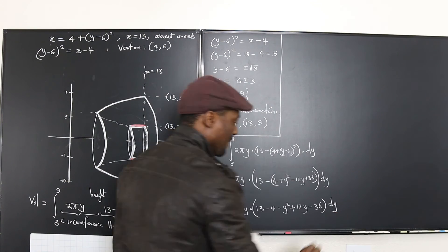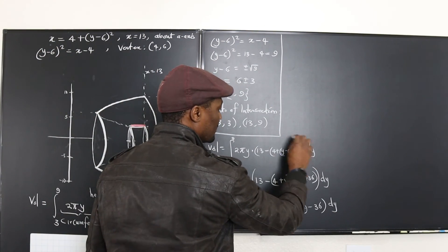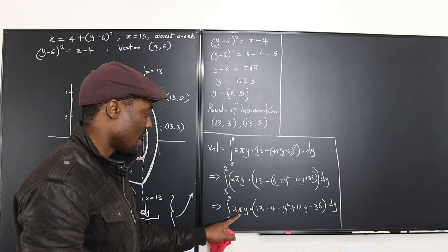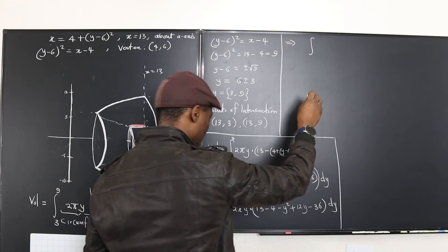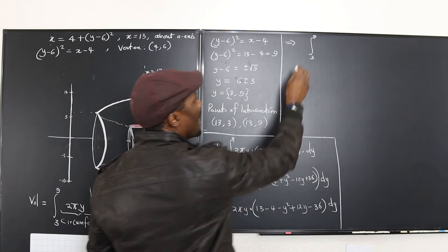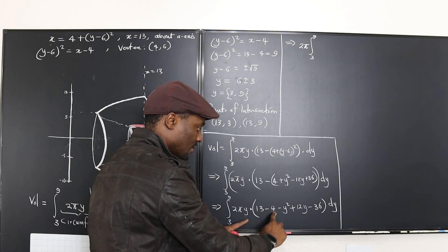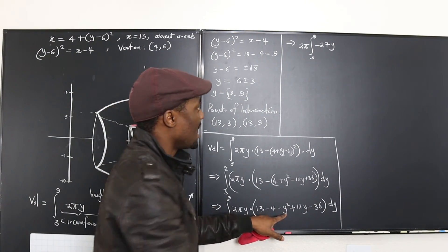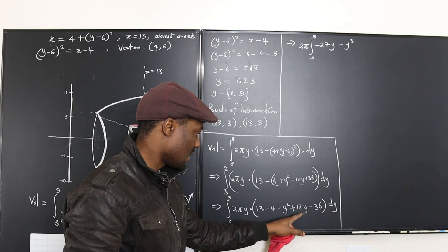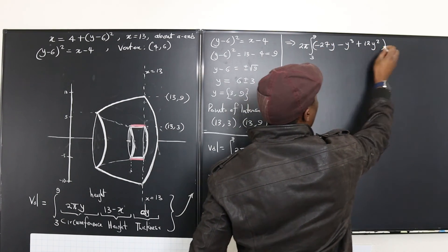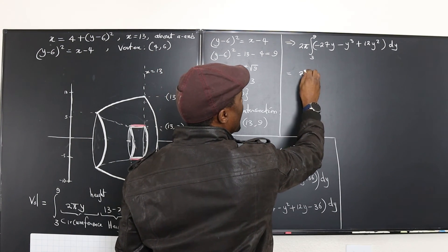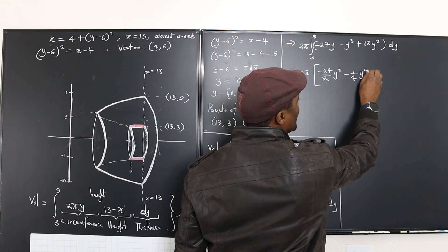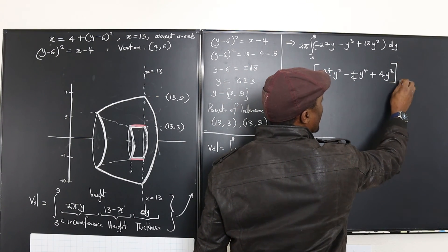Now 13 − 4 − 36 = −27. Taking 2π outside, we have the integral from 3 to 9 of 2π times (−27y − y³ + 12y²) dy. Integrating term by term gives 2π times [−27y²/2 − y⁴/4 + 4y³] evaluated from 3 to 9.